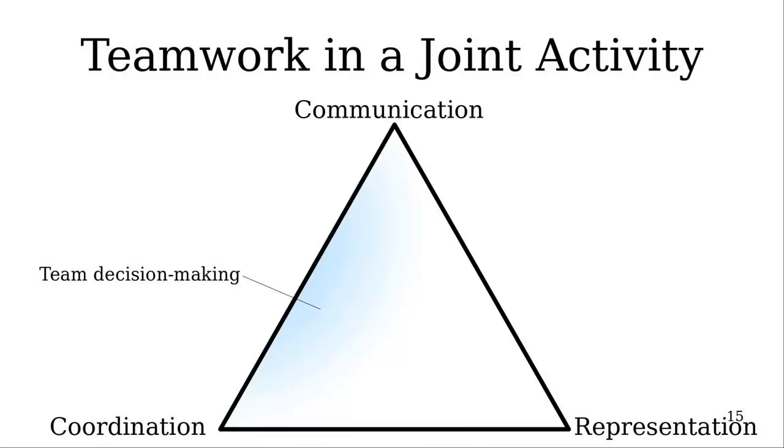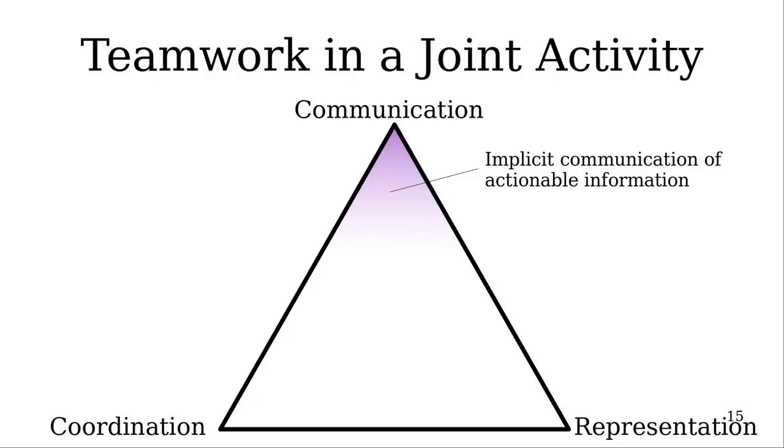The first thing I'm going to talk about is team decision-making. So how does team decision-making happen by using communication to mediate coordination? The second one, which I'll spend most of the time on, is multi-agent social navigation. Thirdly, then we have implicit communication of actionable information, like what you just saw in Hanabi, where it's not the literal but the underlying information that's being communicated.